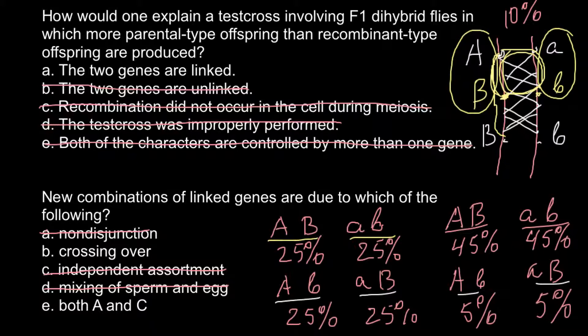Answer B: crossing over. This is how new variants and recombinants — as in our previous example, that is capital A and small b, and small a capital B — might happen. This is due to the crossing over process. So this is our answer.